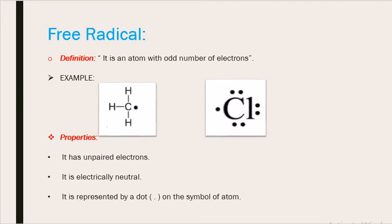Now Free Radical. Free Radical is an atom with odd number of electrons. The electrons in these atoms are unpaired. For example, we can see Methyl Radical here. Carbon with three hydrogens having this dot on it represents the free electron here or the unpaired and odd electron lying there.